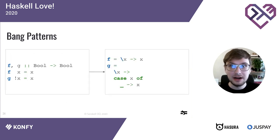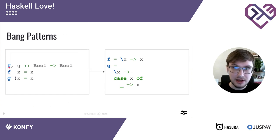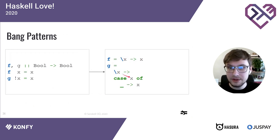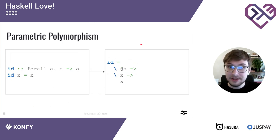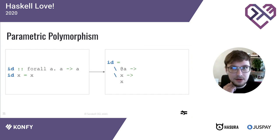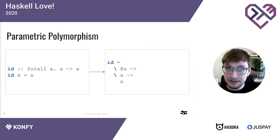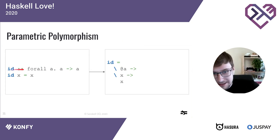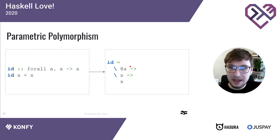Bang patterns are virtually the same as seq — also translated into strict case expressions. Here f is the identity function whereas g forces its argument: in Core, f is just a lambda and g is a lambda with an additional case expression. Now for parametric polymorphism — this is where we start seeing parts of Core not easily observed in surface Haskell. In Core, when you have a type parameter it must be bound by a lambda as if it were a normal function parameter.